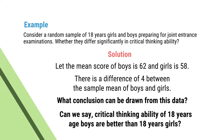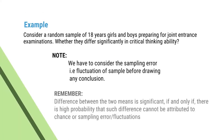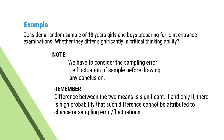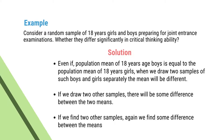What conclusion can be drawn from this data? Can we say the critical thinking ability of 18-year boys and girls differs? In this case, you have to note that we need to consider sampling error — that is, fluctuation of the sample — before drawing any conclusion. Remember: the difference between two samples is significant if and only if there is a high probability that such differences cannot be attributed to chance or sampling error. Even if the population mean of 18-year boys equals the population mean of 18-year girls...